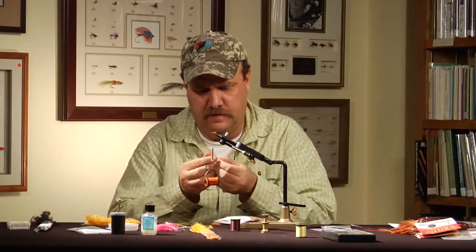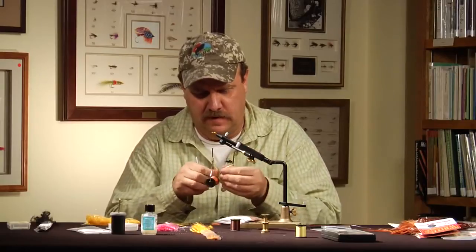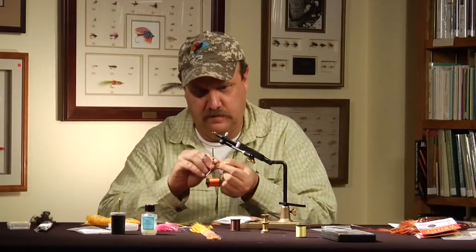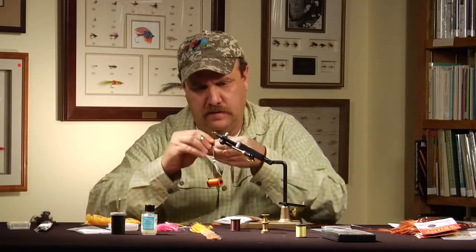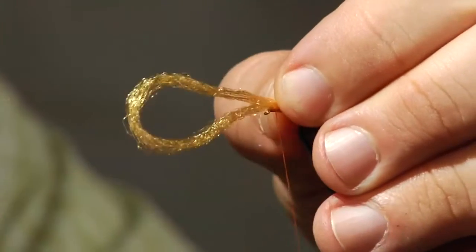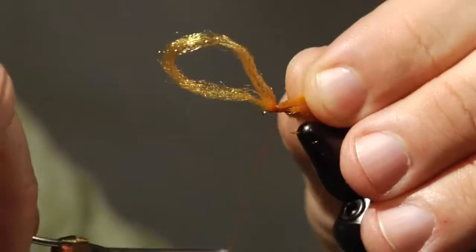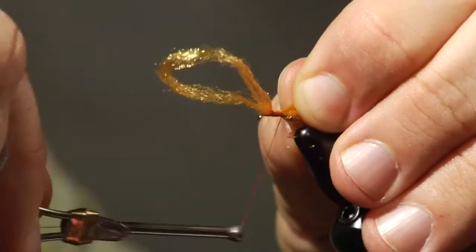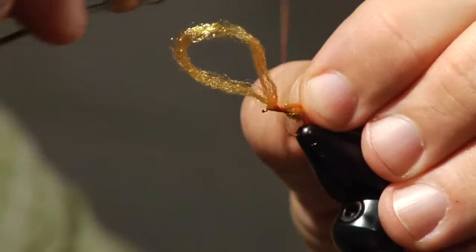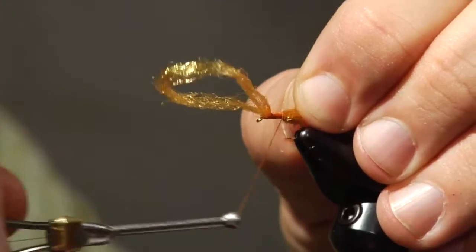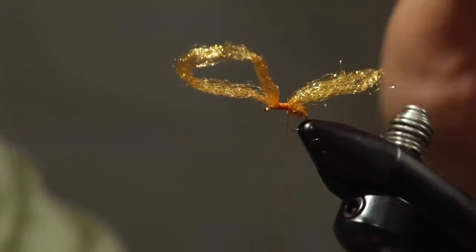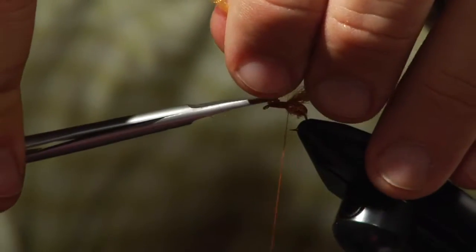I'm going to take a little gold colored Zeylon and I'm going to tie in the wing. I'm going to run that all the way back to right in front of that gaster. Trim that excess out of there.